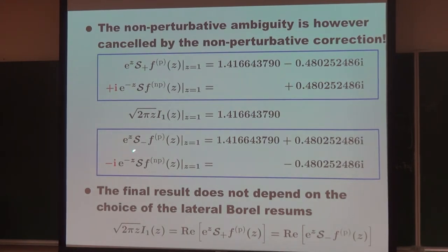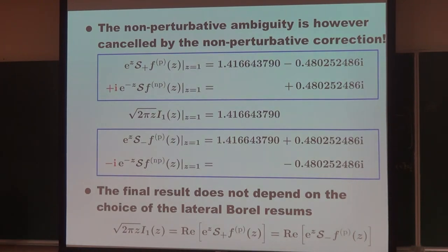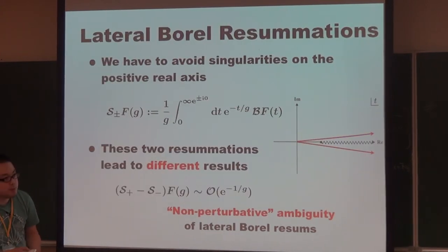There is a beautiful resolution: the non-perturbative ambiguity of the lateral Borel summation is precisely cancelled by a non-perturbative contribution. In this case, the second term cancels the ambiguity of the first Borel resummation. At a specific value such as g equal to one, the Borel resummation of the first term gives a complex value, but the second contribution carries a compensating imaginary part, which precisely cancels the imaginary part of the first term.